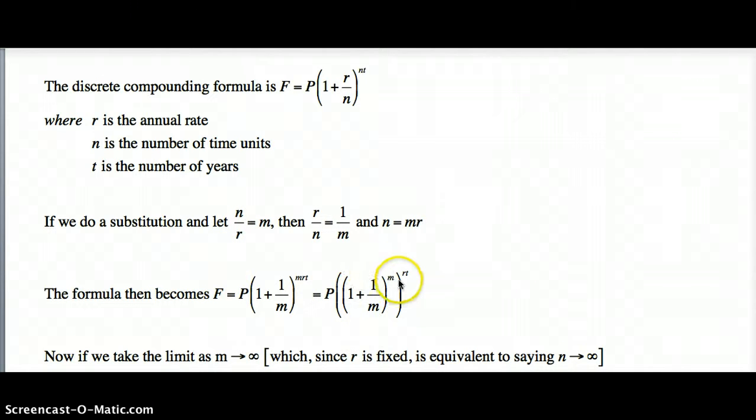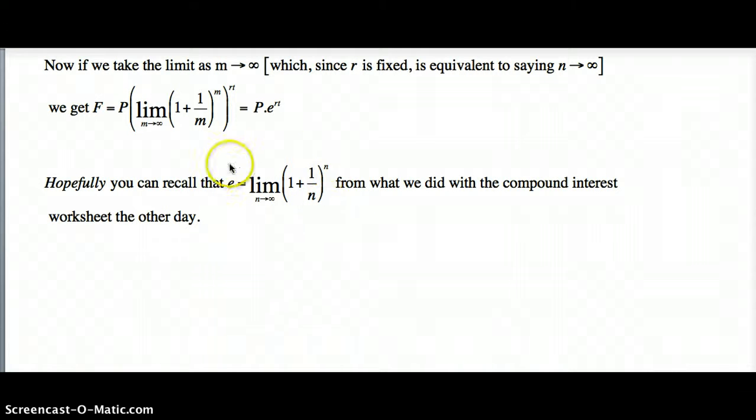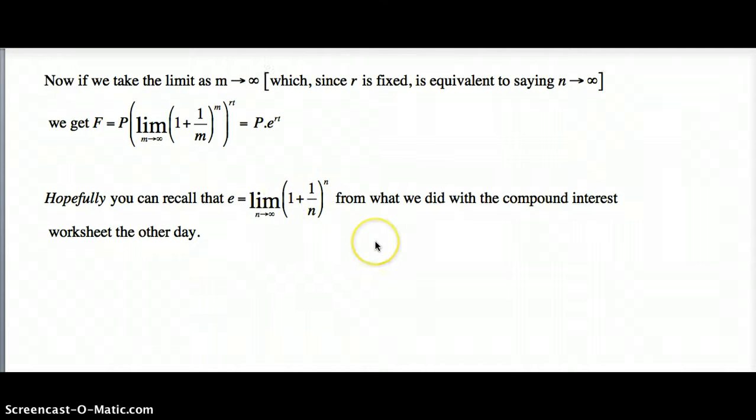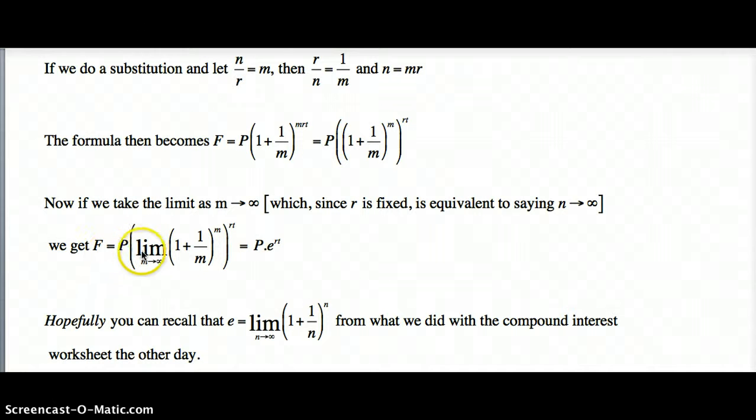So if you take the limit of this as m goes to infinity, that is just e for the same reason it's down here. Which means, therefore, taking the limit—it's just a limit with respect to m, so it doesn't concern r or t or P, which are all constants. The thing in this bracket is actually e by definition, so your formula becomes P times e to the rt. And that, my friends, is where that formula comes from. All the best, good night.